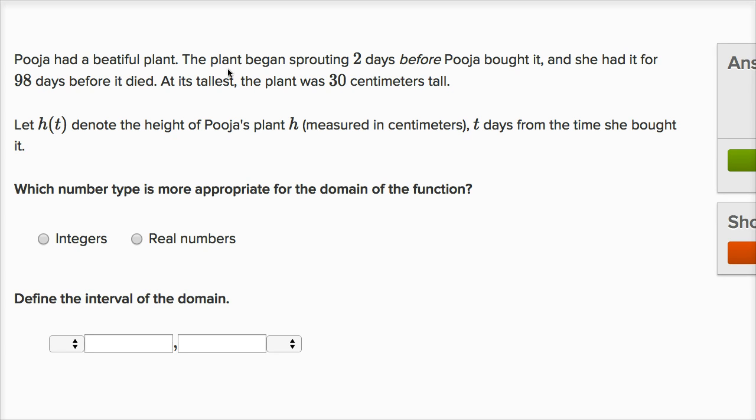Pooja had a beautiful plant. The plant began sprouting two days before Pooja bought it, and she had it for 98 days before it died. At its tallest, the plant was 30 centimeters tall.